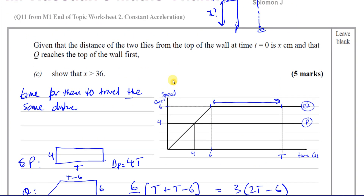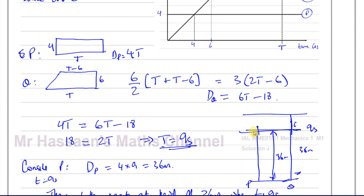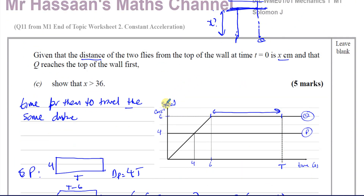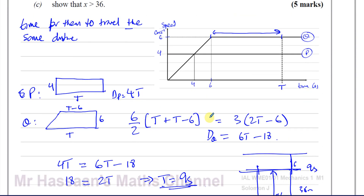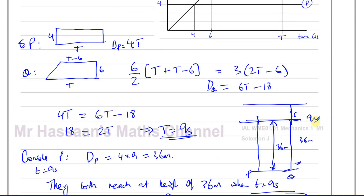So that's why X has to be greater than 36 centimetres. When you see a question like this involving distance, think about the area under the curve. Finding the areas gives you expressions for distance, equating them gives you the time when distances are equal, and you can find the critical distance — anything above that, Q would get there before P because it's moving faster at that point.